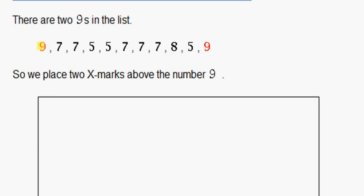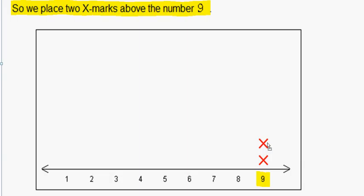In our numbers we have two 9's. We start with the biggest ones, so we place two X marks above the number 9 on our line plot.